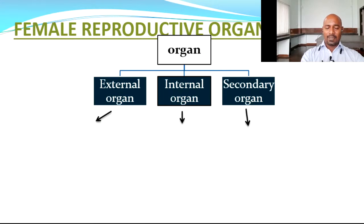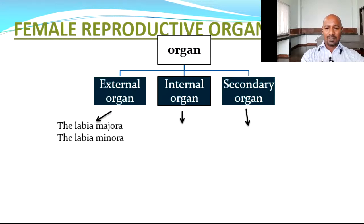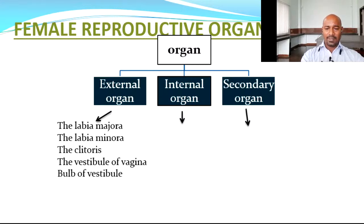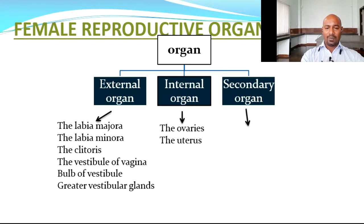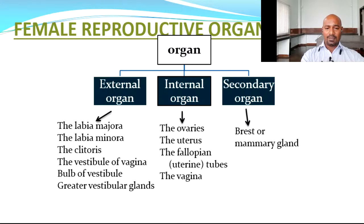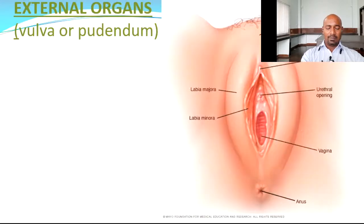In females, the female reproductive organs include external organs, internal organs, and secondary sexual organs. The external organs are the labia majora, labia minora, the clitoris, vestibule of the vagina, bulb of the vestibule, and greater vestibular glands. The internal organs include the ovaries, uterus, fallopian tubes, and the vagina. The secondary sexual characteristics or organs are the breast or the mammary gland.